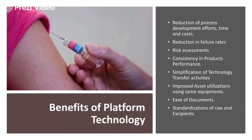Technology transfer of batches from R&D to pilot plants to manufacturing plants becomes easy. Once you have a technology transfer platform protocol, you can refer to that protocol for similar dosage forms as well. It also helps in asset utilization — the same machinery, equipment, and production line can be utilized for new molecules or generic developments. It helps in ease of documentation — the same format and documentation protocol can be utilized for another dosage form — resulting in reduction of time, cost, and standardization of raw materials and excipients. Raw materials standardized for one dosage form can be utilized for the development of another.